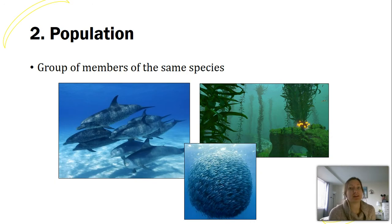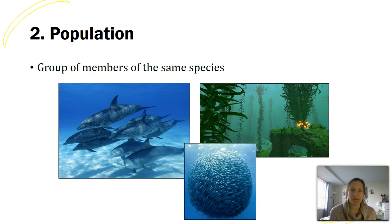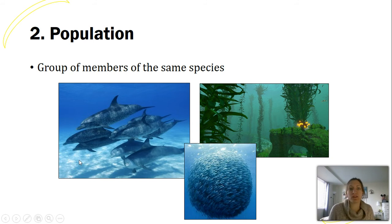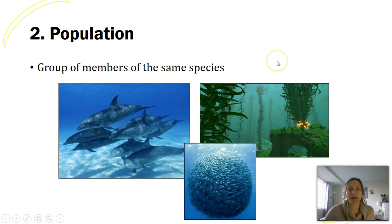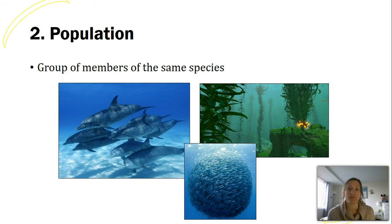The next level up is a population, which we'll study for the first part of this unit. A population is a group of members of the same species — it can apply to humans or any living organism. For example, a dolphin pod is a population of dolphins, a school of fish is a population, and kelp in a kelp forest is a population of kelp. We're just talking about one species.